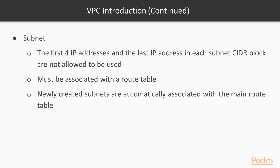These five reserved addresses represent the network address, VPC router address, DNS server address, an address for future use, and the last address which is the network broadcast address. So whenever you assign a CIDR block to a new subnet, remember that you cannot use five of those addresses, and take that into account when calculating the size of your subnet.